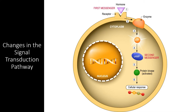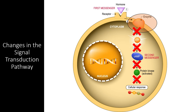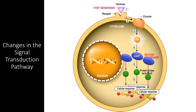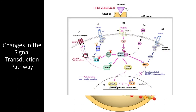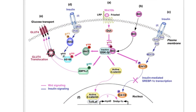Now let's take some time to consider changes in different components involved in signal transduction pathways. Previously we considered how changes to the start of signal transduction — such as changes to the signal molecule or receptor protein — affected the whole pathway. Now let's consider what happens if changes occur later in the process. In general, the same rules apply: if a mutation causes significant changes in an enzyme at the start of the signal transduction pathway, it will disrupt the entire pathway. On the other hand, interruptions downstream in the signal cascade can allow some parts of the pathway to continue while others do not.